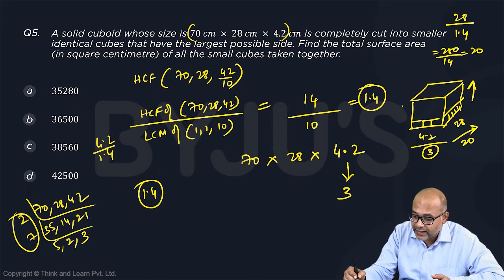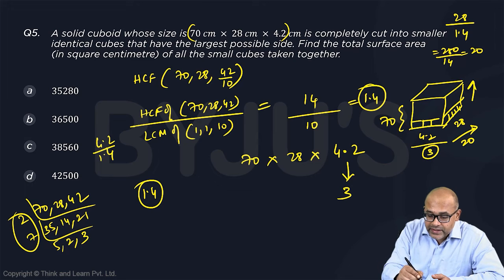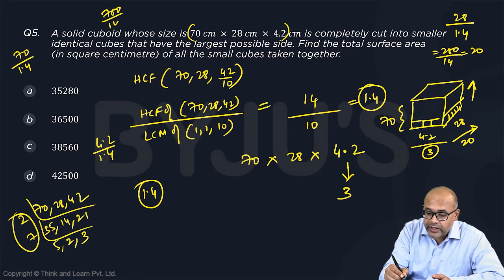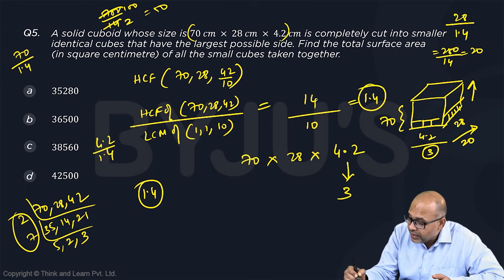Along the height, what is the height? The height is 70. Same logic, 70 when you divide by 1.4. So this is 700 divided by 14. So 7 goes 100 times, 7 goes 2 times, this is 50. So you'll get, along the vertical side, you'll get 50 such things.